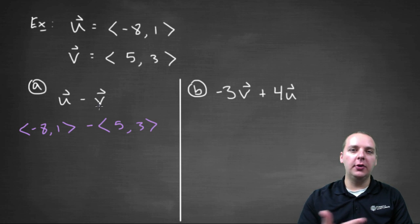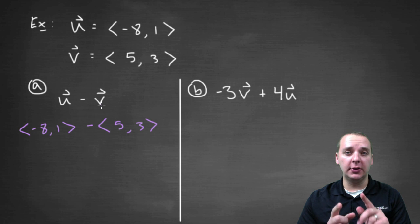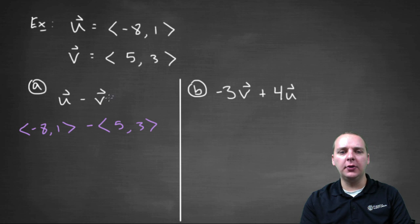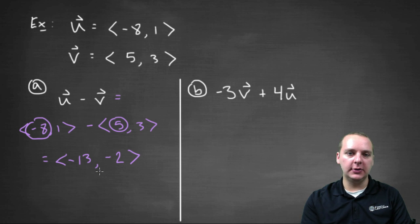So we've got the vector negative eight comma one minus the vector five comma three. And if you remember from an earlier video when you're subtracting two vectors, basically all you do is subtract the components, the corresponding components. So we'll take negative eight minus five, so that would be negative thirteen. And then we'll take one minus three which is negative two.